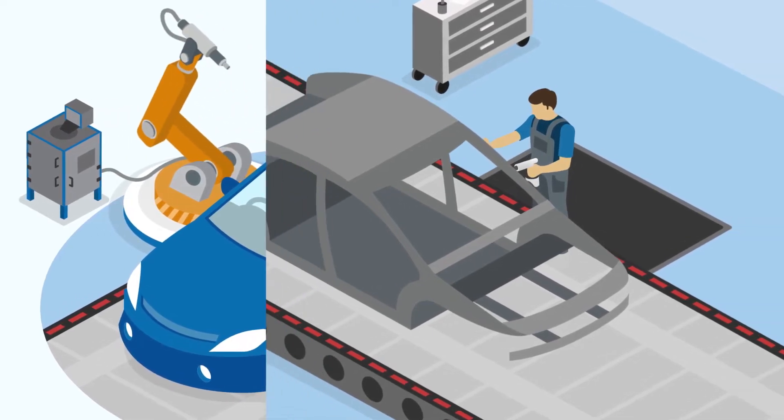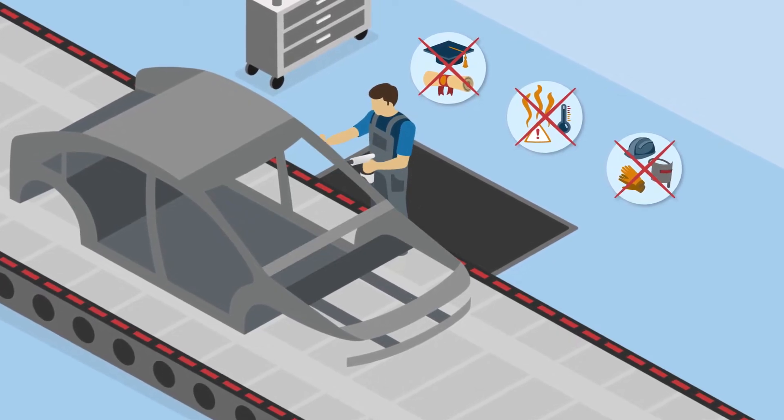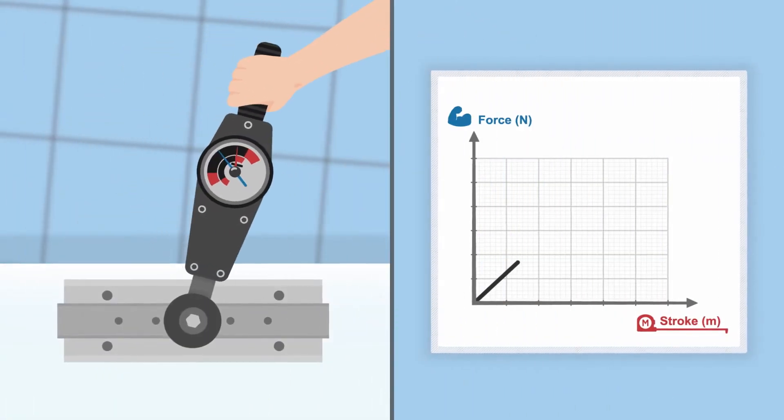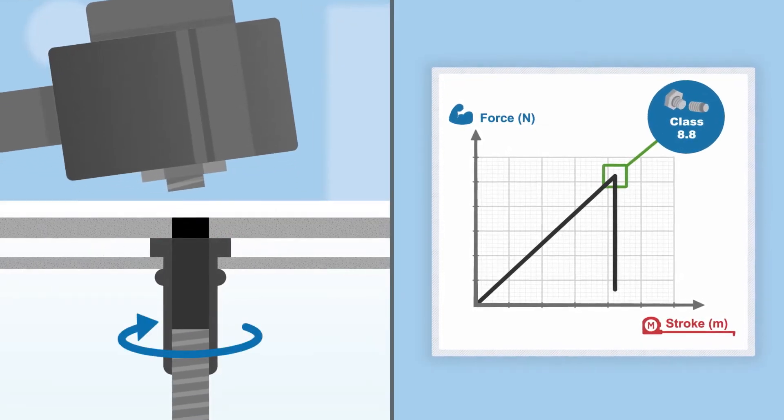This ensures simple and safe installation without the need for specific operator qualification or training. In fact, the Rivkul solution adds a male or female thread whose strength is equivalent to that of a conventional class 8 nut or stud.